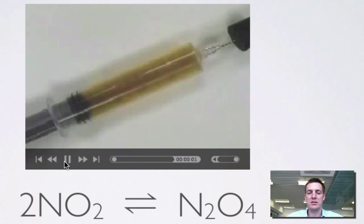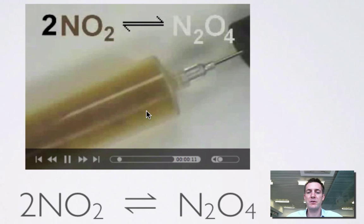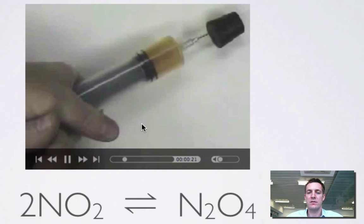We're taking this syringe with a mixture of the two gases. First, we're going to squash it and watch the color. Introducing the system again: brown on the left, colorless on the right. Hopefully you saw that when we compressed